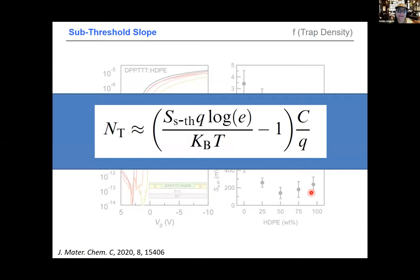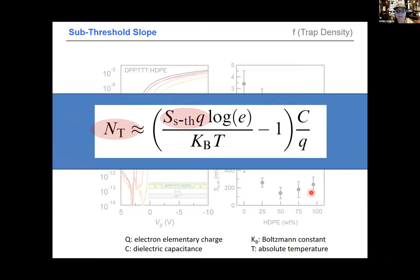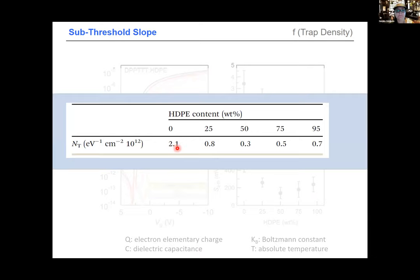Now to Al and his work on traps. We can relate directly the sub-threshold slope with trap density. Here we have a formula of trap density that relates directly to sub-threshold slope with elementary parameters and device parameters like dielectric capacitance. If we calculate trap density in our blends, the neat material has relatively high number of traps, but the more polyethylene we add, especially around 50% and 75-80% polyethylene, we massively reduce those traps.